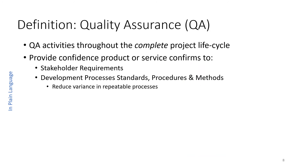Quality assurance applies throughout the complete project lifecycle, not just the development phase, but the whole lifecycle. It provides confidence that the product or service conforms to stakeholder requirements and, importantly, to the development process standards, procedures, and methods. You want to avoid situations where procedures are not being followed carefully, are outdated, or shortcuts are being taken. One of the main things Deming emphasized was the need to reduce variance in repeatable processes, so that widgets come out with very good tolerances.